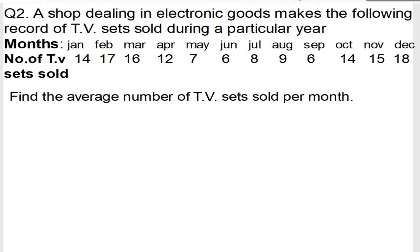Now we are doing exercise 13.1, question number 2. The question says a shop dealing in electronic goods makes the following records of TV sets sold during a particular year. So here we have number of TV sold. We need to find the average number of TV sold per month.